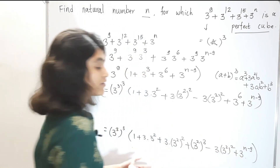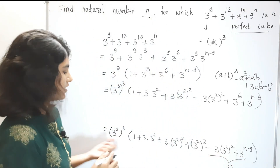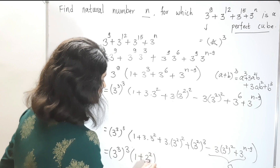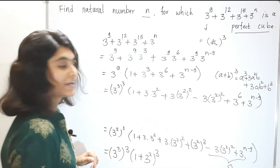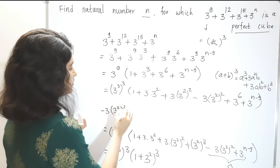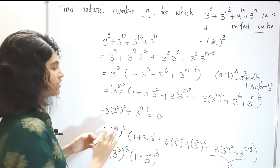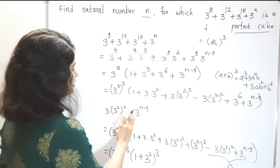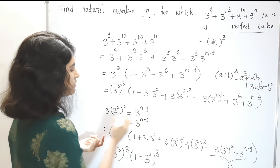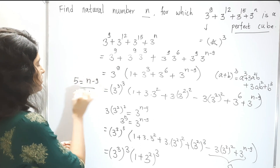This number in the bracket is a perfect cube if and only if the leftover term equals zero. So the condition is: 3·(3^2)^2 + 3^(n−9) = 0, which means these two terms must cancel. That gives 3^5 = 3^(n−9), so we must have 5 = n − 9, meaning n must be 14.